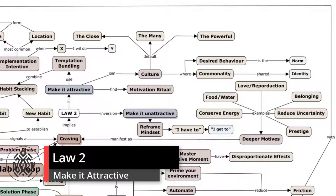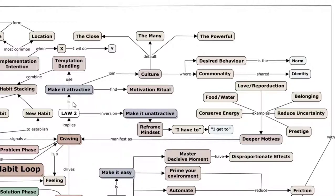The second law has to do with craving - you need to make your habit attractive. One way to do that is temptation bundling. For example, if you want to start stretching, you could say: when I watch Netflix, I will stretch. It makes the habit more attractive and less painful. A lot of people watch TV while on the bike, or listen to a podcast when they go for a walk. That's what I do - it's a good way to listen to podcasts, take my mind off things, and do some light exercise.